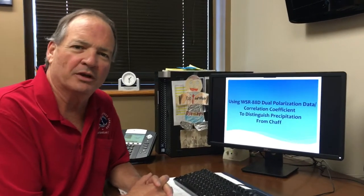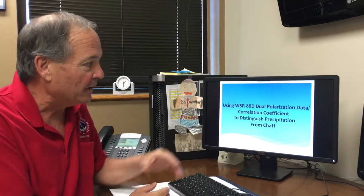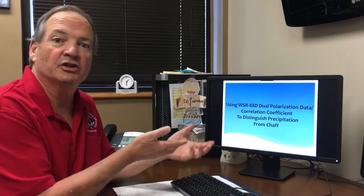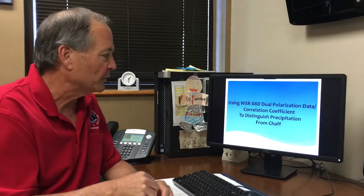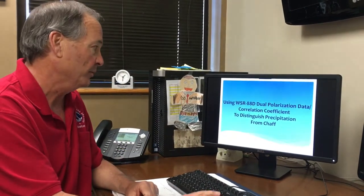Hello, my name is Steve Rowley. I'm the Science and Operations Officer at the National Weather Service in Charleston, South Carolina. I want to talk today about some of the returns that you may be viewing on your smartphone when you're trying to figure out what's going on on the radar, and give you some tools to determine if what you see is actually precipitation or something else — including this idea of chaff.